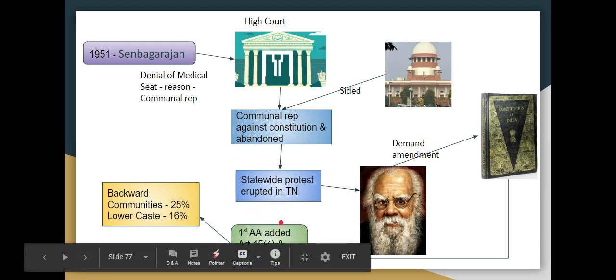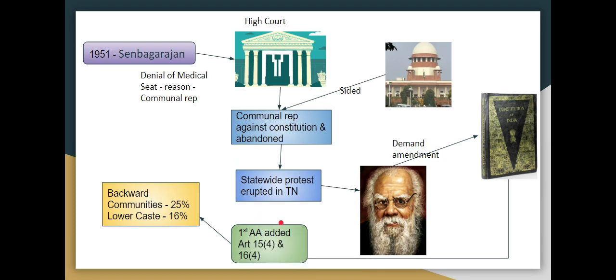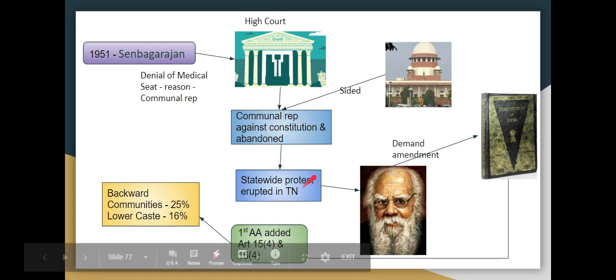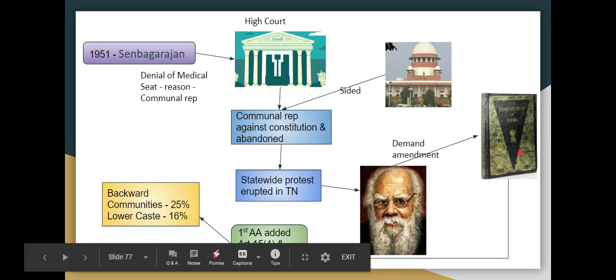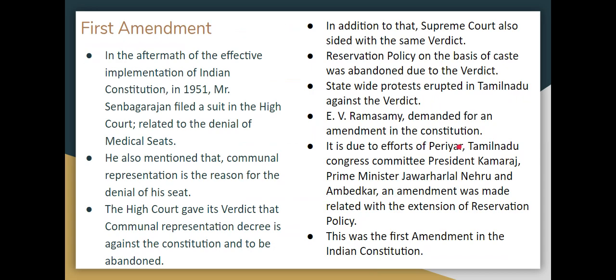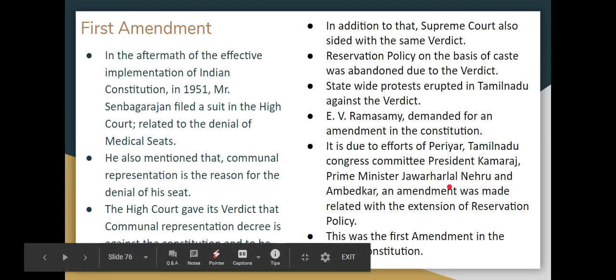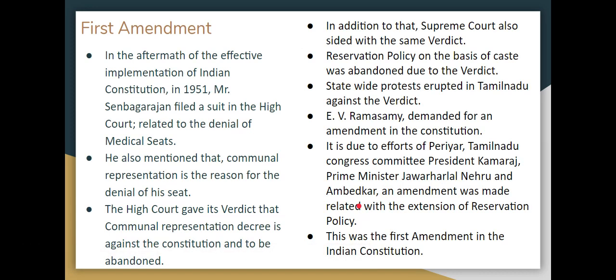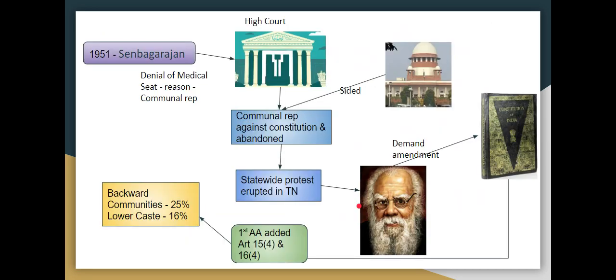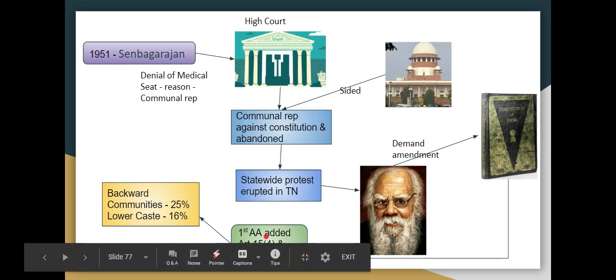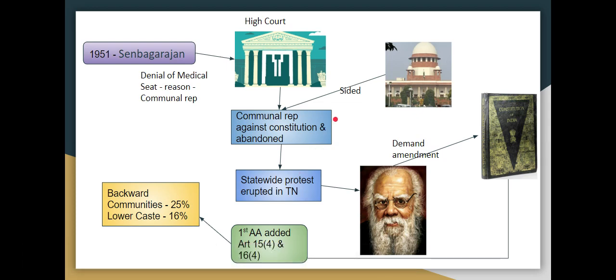In Tamil Nadu, the Supreme Court decided against the communal representation order statewide. However, an amendment to the Constitution was made. Supreme Court President, Prime Minister Jawaharlal Nehru, and Ambedkar supported the first amendment. Article 15 fourth provision and Article 16 fourth provision were added.